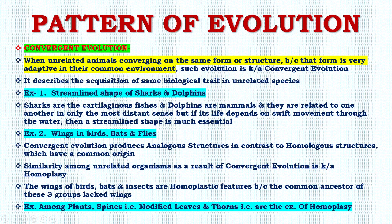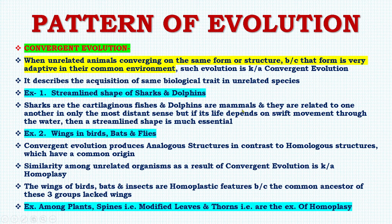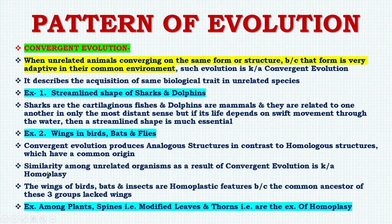Next is convergent evolution. When unrelated animals converge on the same form or structure because that form is very adaptive in their common environment, such evolution is known as convergent evolution. It describes the acquisition of the same biological trait in unrelated species. For example, the streamlined shape of sharks and dolphins — sharks are cartilaginous fishes and dolphins are mammals, only distantly related — but if survival depends on swift movement through water, a streamlined shape is essential. Another example is wings in birds, bats, and flies. Convergent evolution produces analogous structures, in contrast to homologous structures which have a common origin.